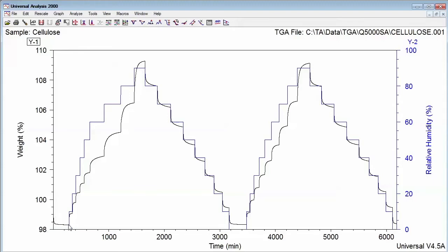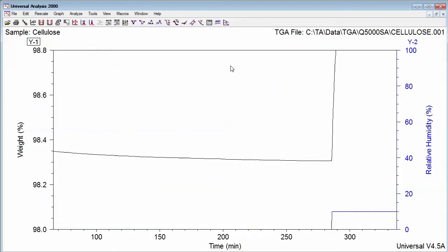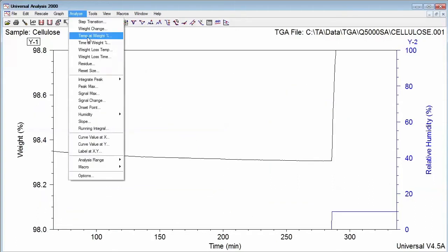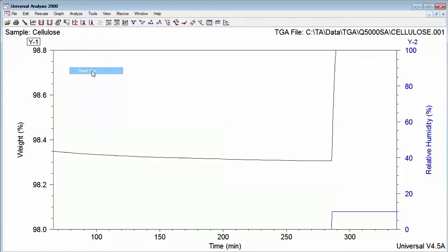Since the sample was initially dried at room temperature and 0% RH, I need to now reset the initial sample mass to the dry mass as weight loss has occurred. To do this, zoom into the drying step, select Analyze, Reset Size, and then choose a data point at the end of the drying step.